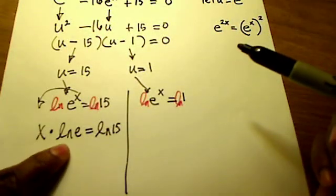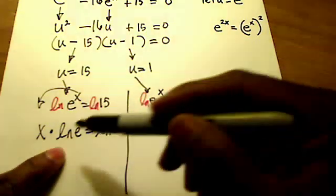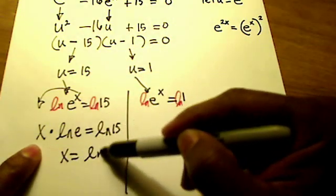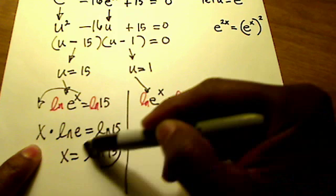And we already know that the natural log of e is simply a 1. So on the left side I have x is equal to the natural log of 15. Hey, there's one answer right there.